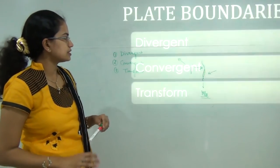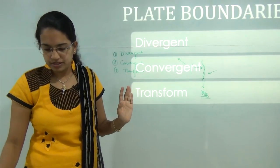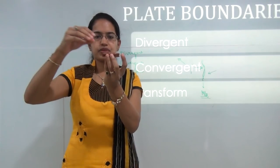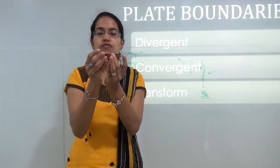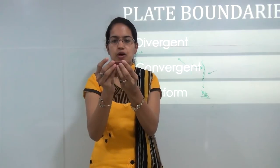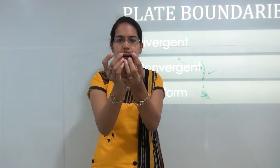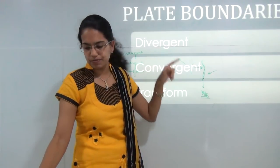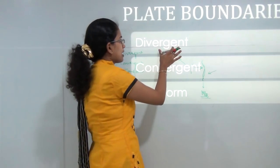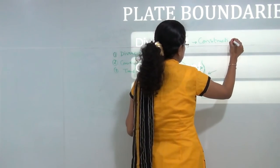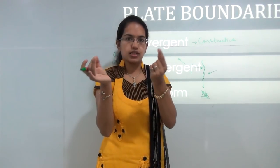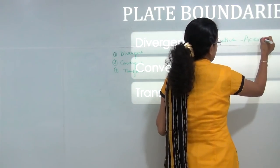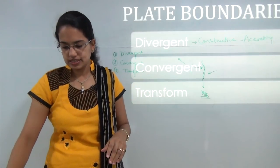Let's try to understand all three using the biscuit. Using the cream-filled biscuit, I am explaining the concept of divergent plate boundaries. Divergent plate boundaries are where the upper crust spreads out and the plates move apart. A lot of students get confused with the names — divergent is also known as constructive plate boundaries, since the two plates are diverging and something is being formed in that region. It is also known as accreting plate boundaries.